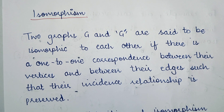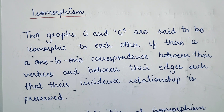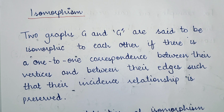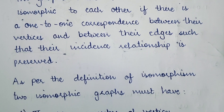That means if there are two graphs G and G-hash, they may be drawn differently from each other, but there should be a one-to-one correspondence between their vertices and their edges. The way in which the vertices and edges are incident upon each other should be exactly the same in those two graphs.